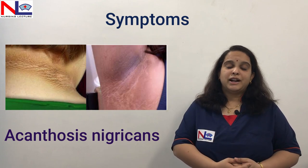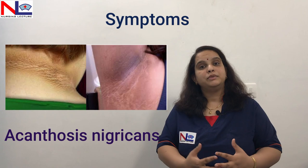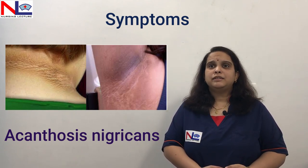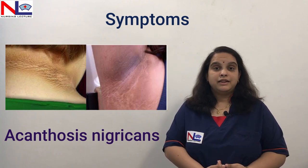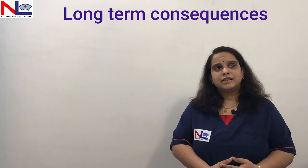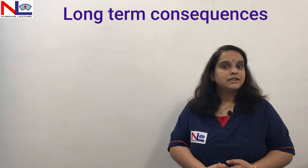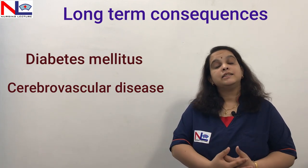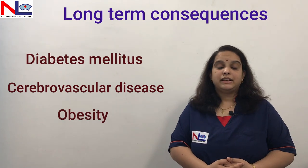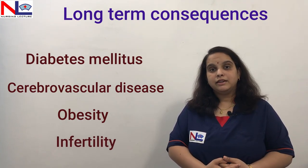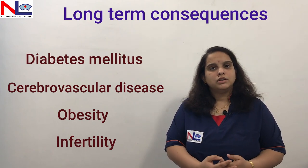With high androgen levels and insulin resistance, these symptoms arise, and in the majority of cases the woman becomes obese. However, lean and thin women can also have PCOS — obesity is not a requirement. As for long-term consequences, the insulin resistance may lead to type 2 diabetes mellitus, cerebrovascular disease, dyslipidemia, obesity in later age, and if she is married, she may have difficulty conceiving — that is, infertility.